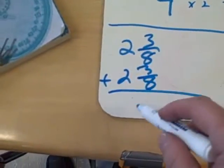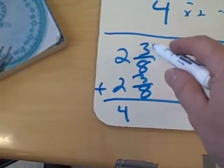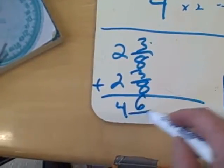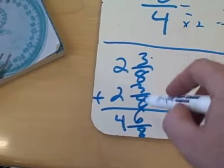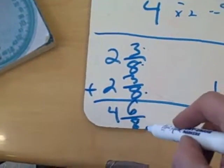It would just be 4 and 6 eighths. Lots of people say 6 sixteenths. Do not add the denominators.